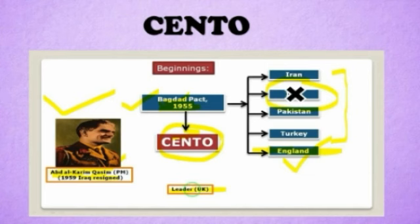In 1955, Turkey, Iraq, Great Britain, Pakistan, and Iran signed a pact known as the Baghdad Pact, or SENTO. This treaty was open to any Arab nations desiring peace and security in the region. SENTO was dissolved in 1979.